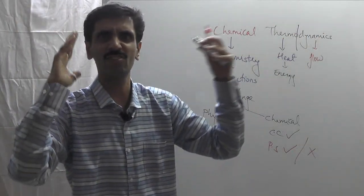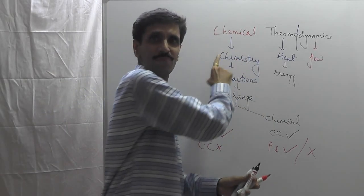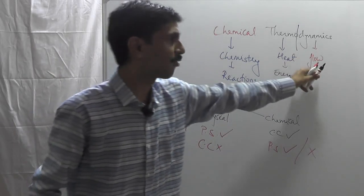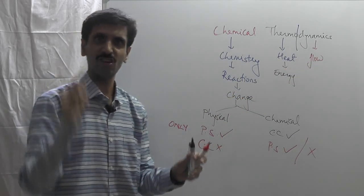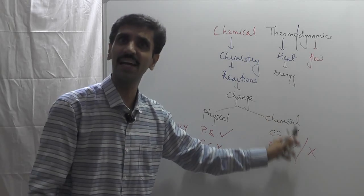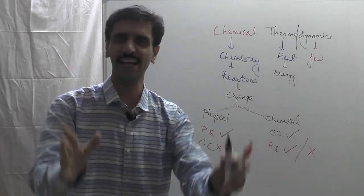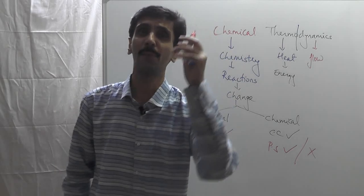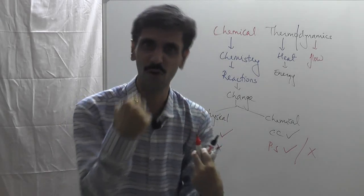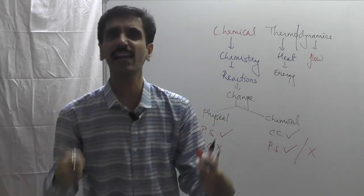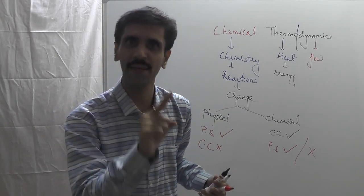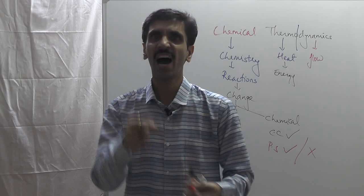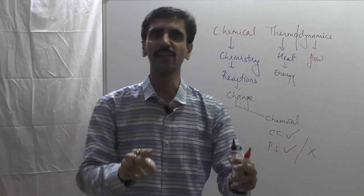So now if you club all these together, we arrive at the definition of chemical thermodynamics, and that is nothing but: Chemical thermodynamics is a branch of chemistry which deals with the flow of heat energy taking place during a physical and a chemical reaction. And this is what the chemical thermodynamics is all about.